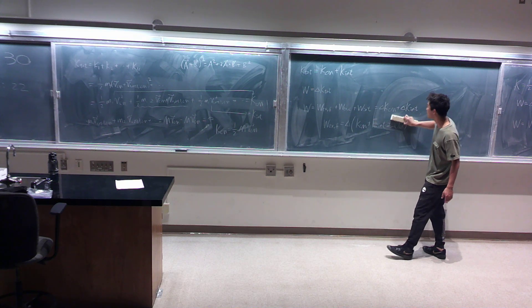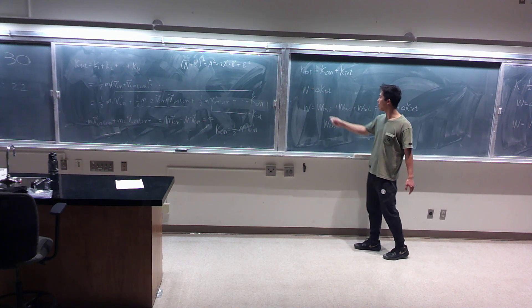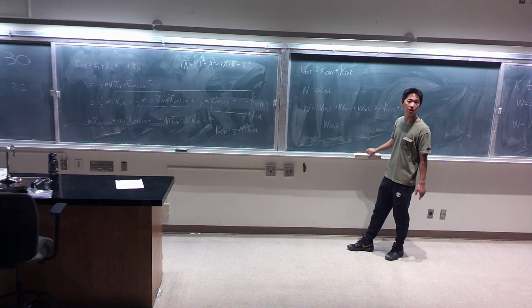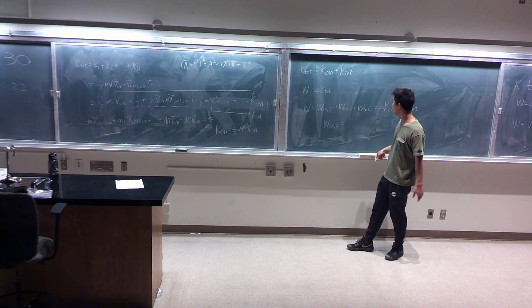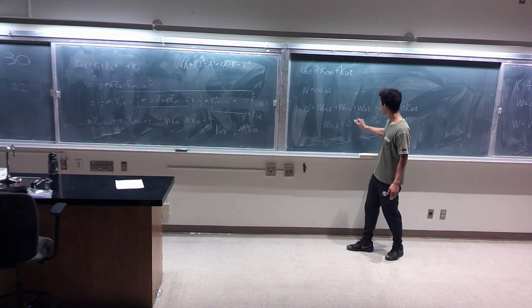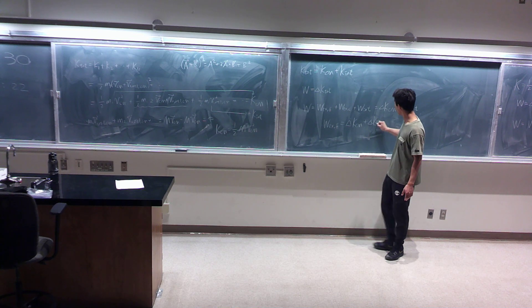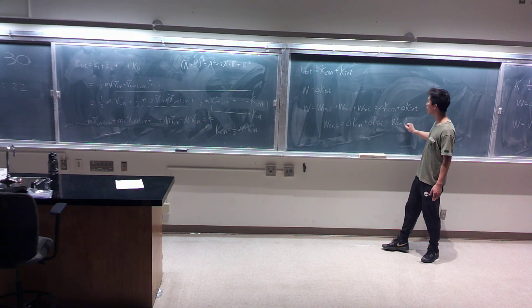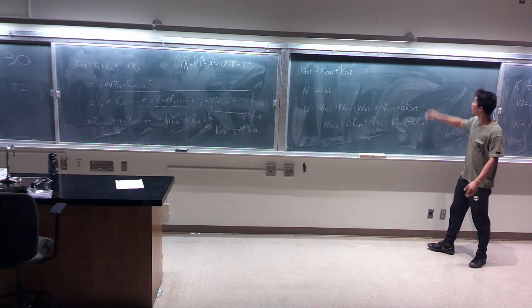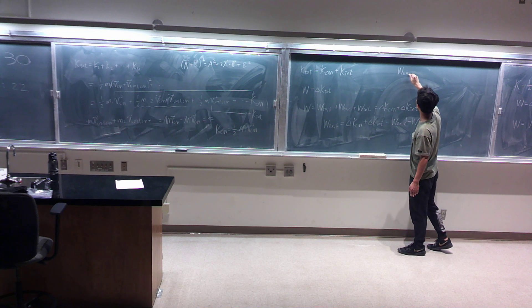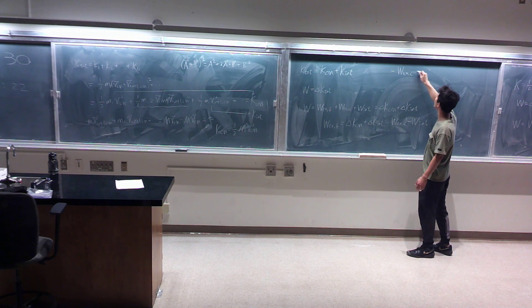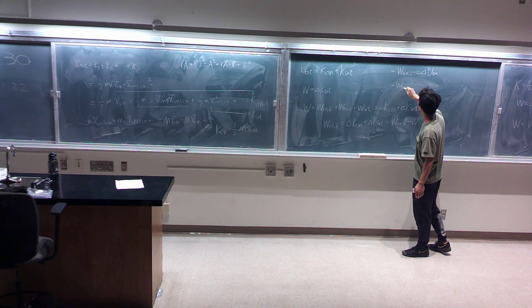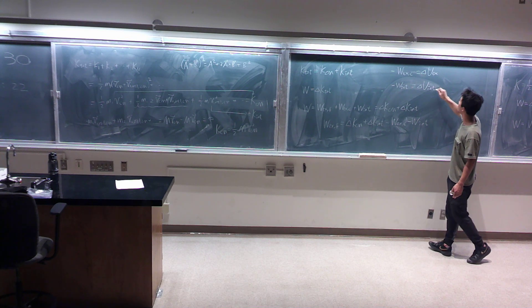Let me do it the other way. If I only keep this term, because only this one is non-conservative — internal forces are assumed to be always conservative, like gravity and spring force — then we have the change of internal kinetic energy and the change of center of mass kinetic energy. We move the two works to the other side so they both get a minus sign. We call the work done by external conservative force with a minus sign the change of external potential energy, and the work done by internal force with a minus sign the change of internal potential energy.